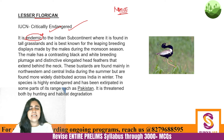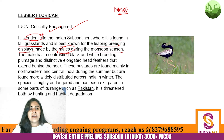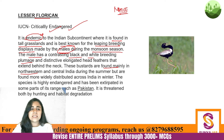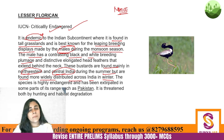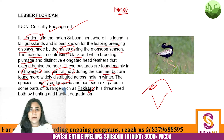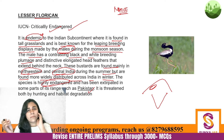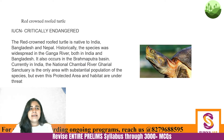Lesser Florican is critically endangered and found in tall grasslands, best known for leaping breeding displays made by males during the monsoon season. The male has a contrasting black and white breeding plumage. They are found mainly in northwestern and central India during summer but are more widely distributed across India in winter. Overall highly endangered — primarily found in India with very tiny bits in Pakistan — so we say it is endemic to the Indian subcontinent. The category is critically endangered, not endangered.